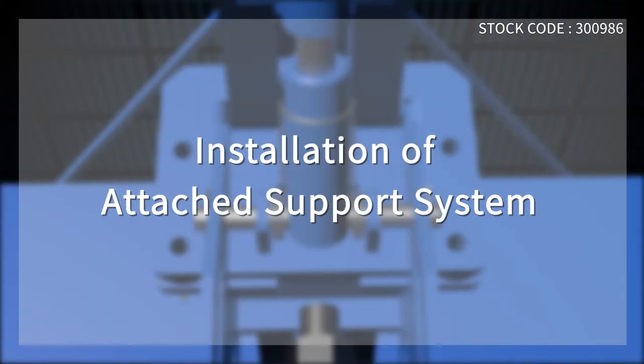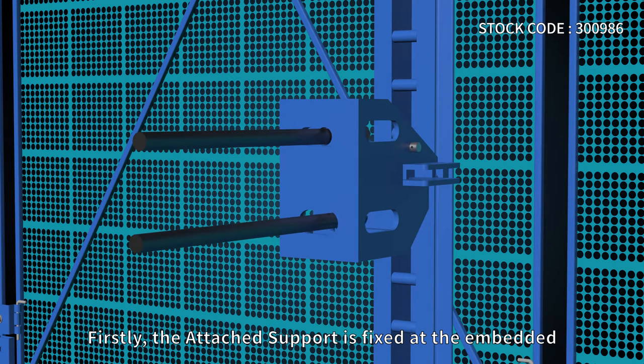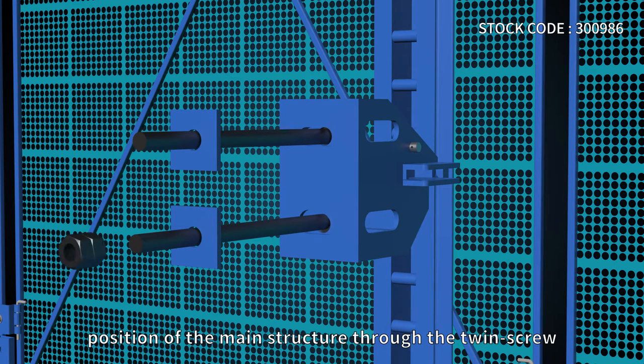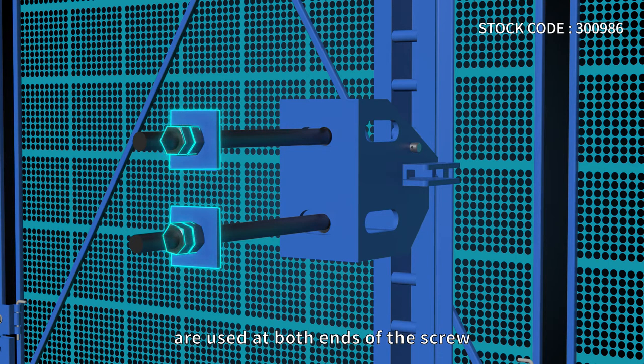Installation of the attached support system: First, the attached support is fixed at the embedded position of the main structure through the twin screw. One square base plate and two nuts are used at both ends of the screw.